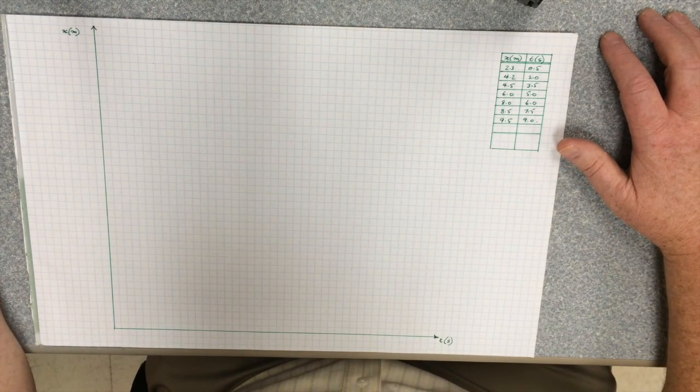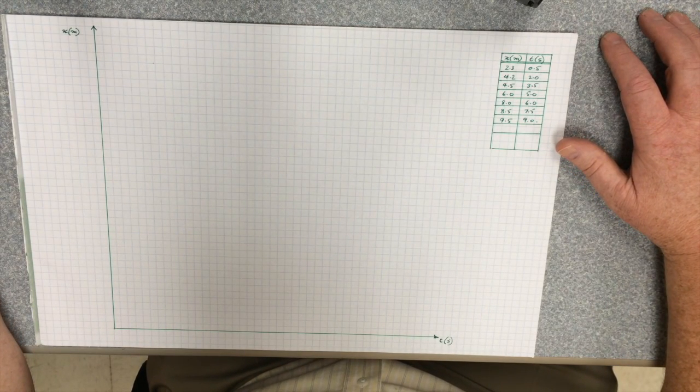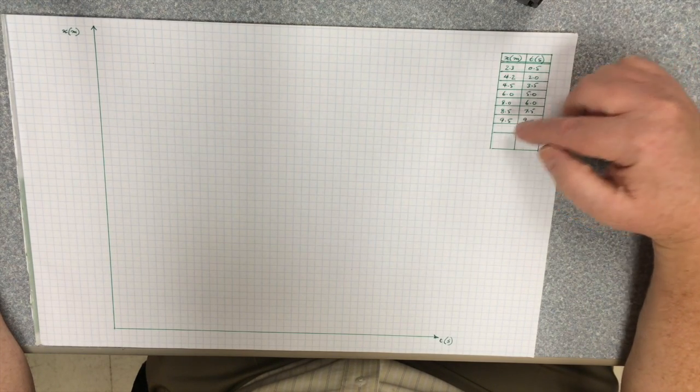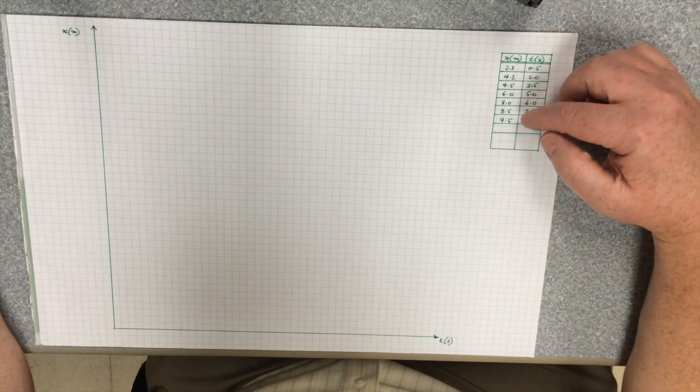Now the question is, how do I go about scaling this? Well, the first thing I do is I see what my largest number is. In this particular case, I'm going to have an origin of 0, 0.